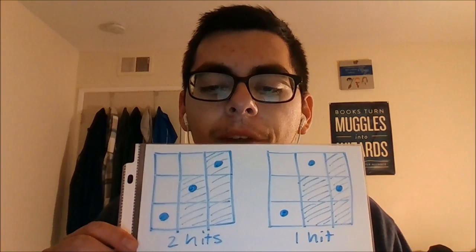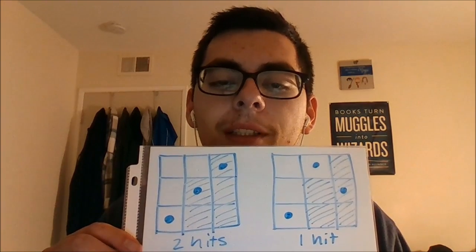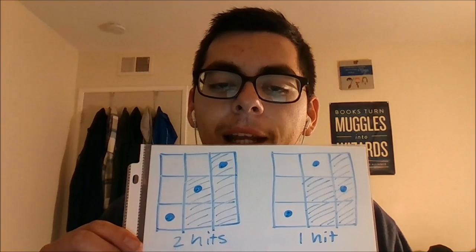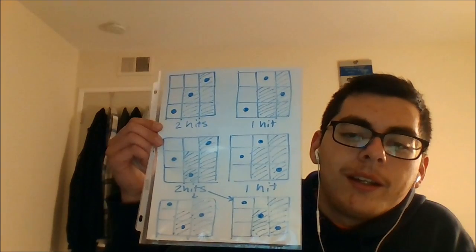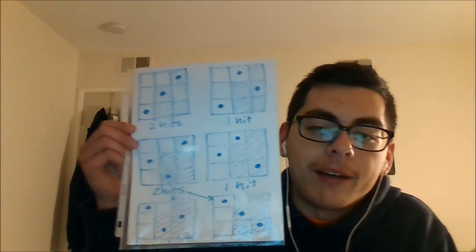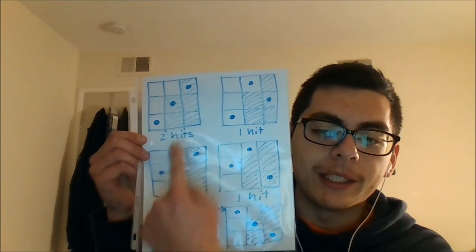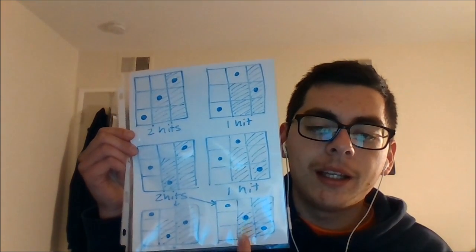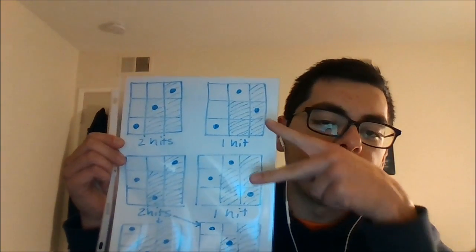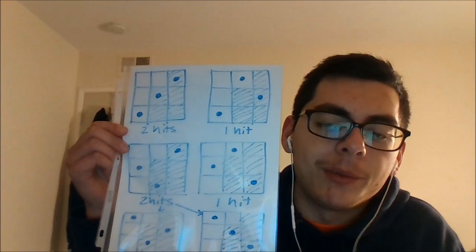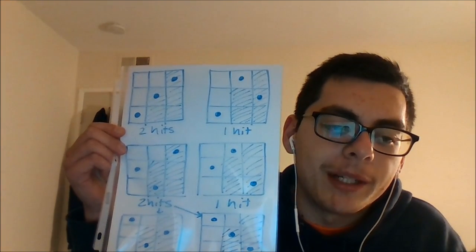If you look at all the possibilities of placing three Rooks on this board in a non-attacking placement, and if you count them all, we have four different ways of placing three Rooks so that two of them hit the shaded spot. We have two different ways of placing three Rooks on the entire board where only one will hit the shaded spot. So that's the basic idea of a hit number. In this case, the second hit number is four and the first hit number is two.